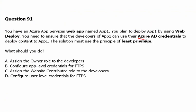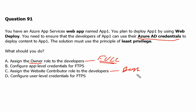Since the question specifically asks us to use Active Directory credentials, we are left with Option A and Option C. Option A provides full access because it is the Owner role. The Website Contributor role is the best fit for this question because it allows the user to manage the website but not the web plan, and the user will not be able to assign permissions to other users. Therefore, as the least privilege option, Option C is the correct answer.